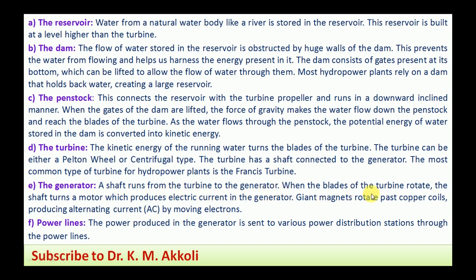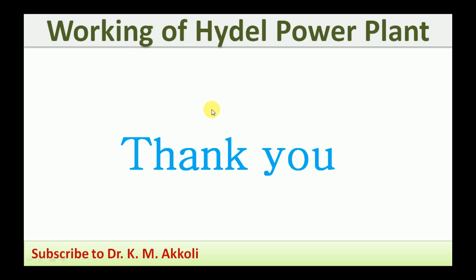The shaft runs from the turbine to the generator, and the rotation of the turbine blades turns the rotor, which produces electric current in the generator. Rotating magnets cut copper coils, producing alternating current. The power lines distribute the electricity generated — the power produced in the generator is sent to various power distribution stations through the power lines and supplied to the power grid. Thanks for watching; subscribe, comment, and share.